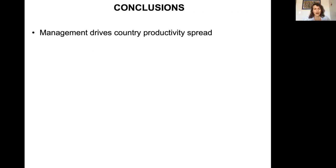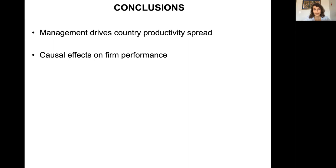To conclude, this talk shows that management drives country productivity spread — something true in both developed and less developed countries. The World Management Survey shows that there are huge productivity spreads even within firms and within countries. Management is able to have a causal effect on firm performance: firms that receive managerial interventions adopt managerial practices and improve their performance. Notably, these effects are persistent — 15 years after a management intervention, we can still observe a differential pattern in firm performance between treated and non-treated companies.